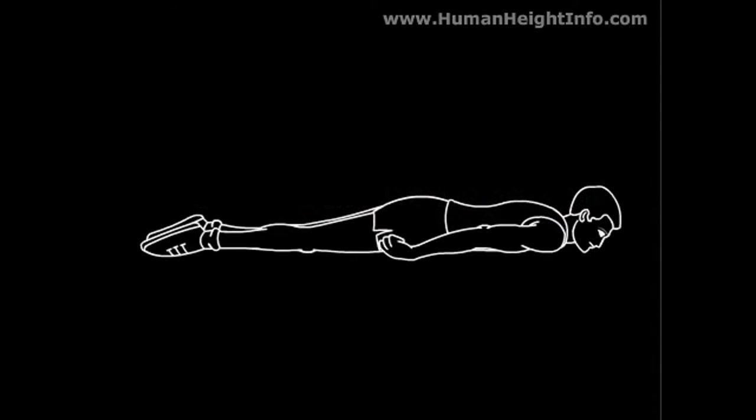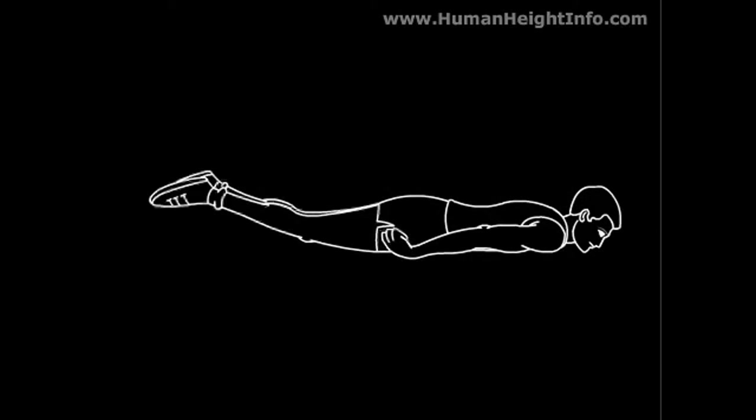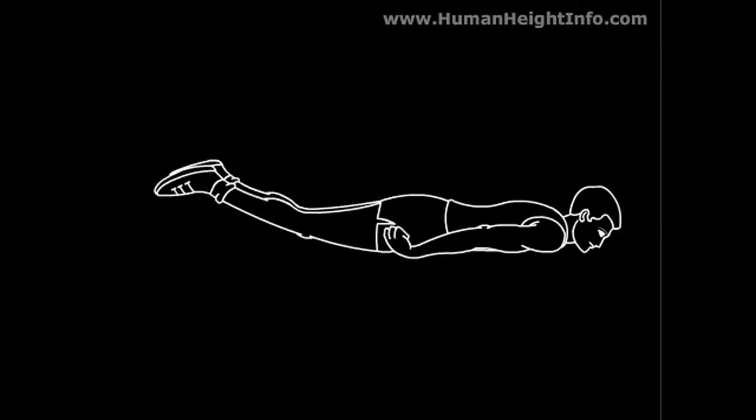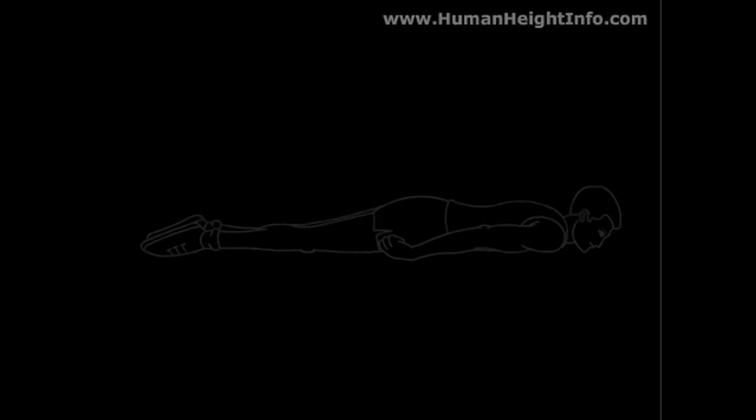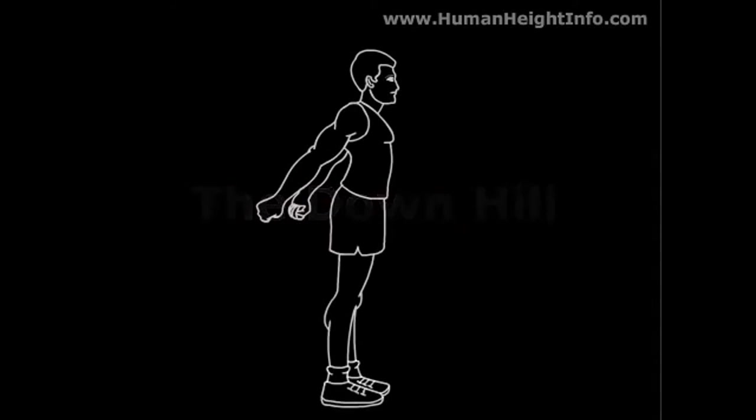Straight legs up: Lying face down with your palms down on the sides, raise both your legs up together as high as possible. Keep your feet together. Each repetition should last three seconds.